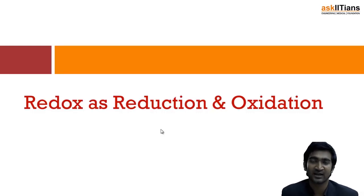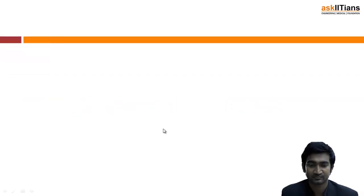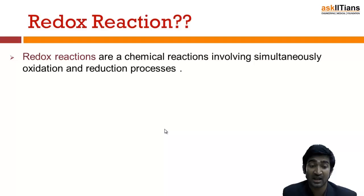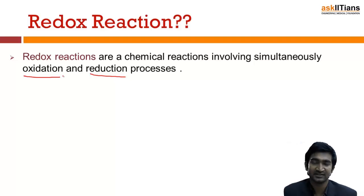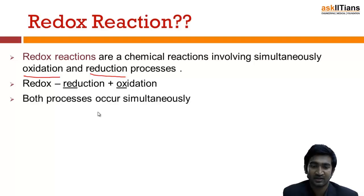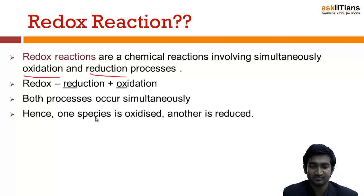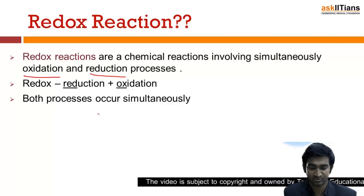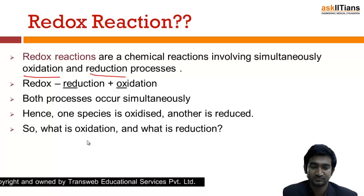What exactly is a redox reaction? These are chemical reactions which involve simultaneously the oxidation and reduction process. So if both oxidation and reduction occur simultaneously, that is a redox reaction — because it is formed from reduction plus oxidation. The condition is that both processes must occur simultaneously, so one species will be oxidized and another species will be reduced.